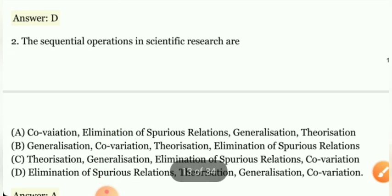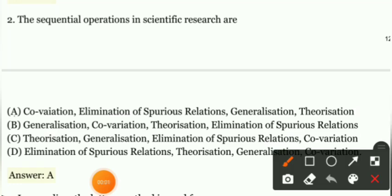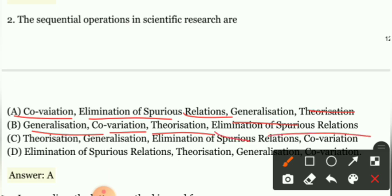Come to the next question. The sequential operations in scientific research are: Option A - co-variation, elimination of spurious relations, generalization, theorization. Option B - generalization, co-variation, theorization, elimination of spurious relations.